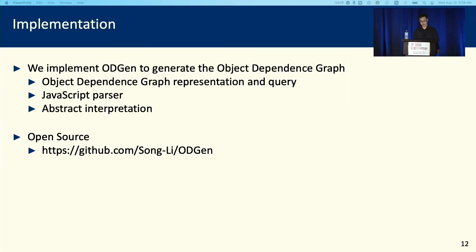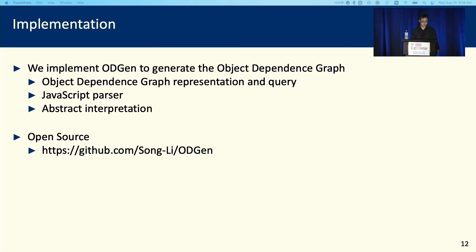For the evaluation, to evaluate the performance of our design, we implemented ODGEN to generate the object-dependence graph. ODGEN includes three different parts: the object-dependence graph representation and query, a JavaScript parser, and abstract interpretation for generation. Our tool is fully open-sourced and you can get it from the provided link.